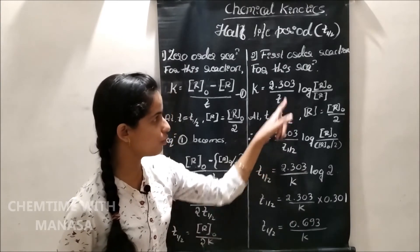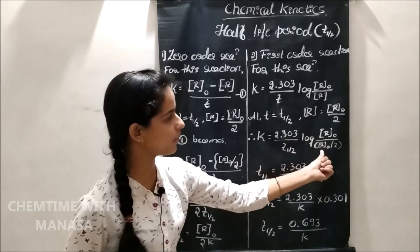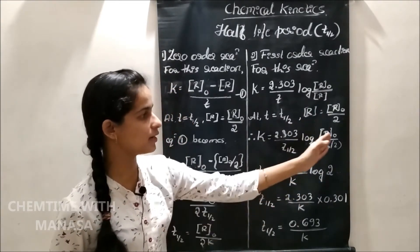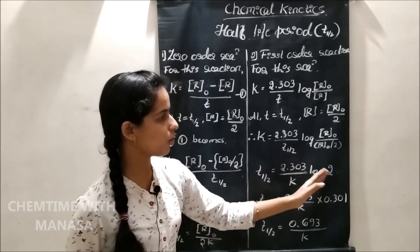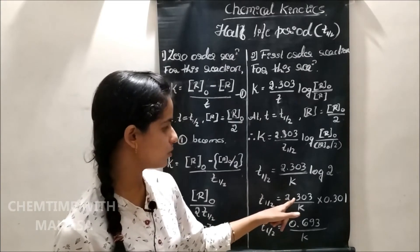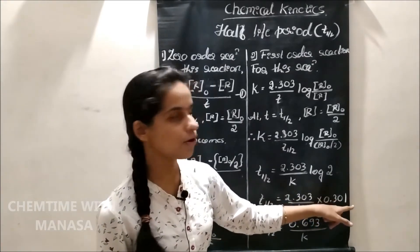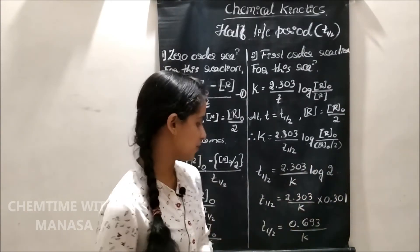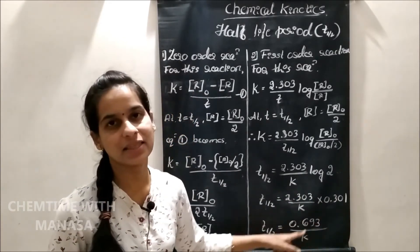Therefore, K is equal to 2.303 divided by T half, multiplied by log of R naught divided by R naught by 2. Simplifying, T half equals 2.303 divided by K, multiplied by 0.301, because log 2 equals 0.301. Therefore, T half equals 0.693 divided by K. This is the equation for the half-life period of the first order reaction.